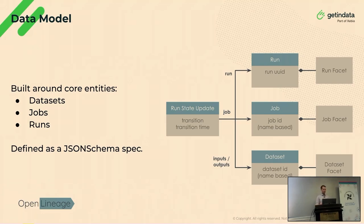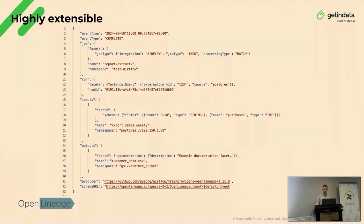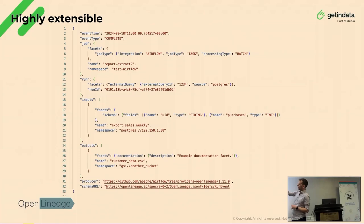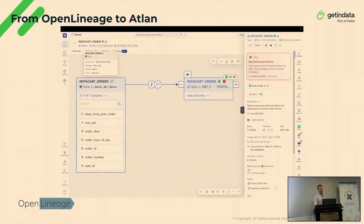Each of these entities can be extended with a facet — a small atomic piece of metadata attached to an event. Here's an example of an Open Lineage run state update. We can see a job entity, a run entity, and input and output datasets. There are facets here — for example, one tells us this is an Airflow task. Then you have facets like schema for the dataset or a documentation facet that gives a description. This is already enough information for a backend like Atlan to create a graph and enrich the datasets with the information provided.